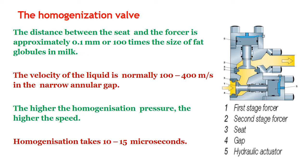Here we will understand about the homogenization valve. The distance between the seat and the forcer is approximately 0.1 millimeter, or 100 times the size of fat globules in milk. The velocity of the milk is normally 100 to 400 meters per second in the narrow annular gap. The higher the homogenization pressure, the higher the speed. Homogenization takes about 10 to 15 microseconds.